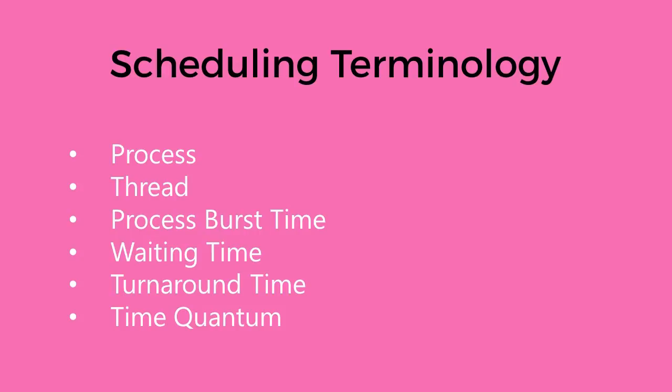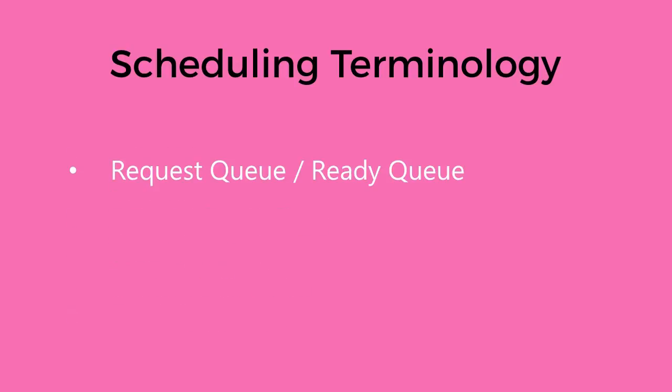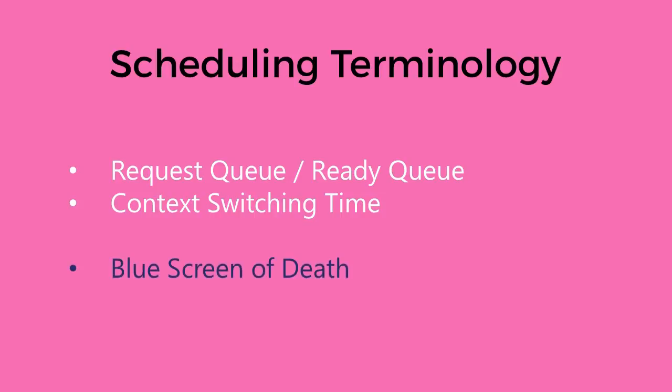Time quantum is the amount of time given to each process while executing in a round-robin scheduling algorithm. The ready queue is a queue of processes which tells the CPU which one has to be executed next. Context switching time is the time required to start executing another process and to save the current state of the existing process, and context switching time is especially important in preemptive Shortest Job First scheduling.